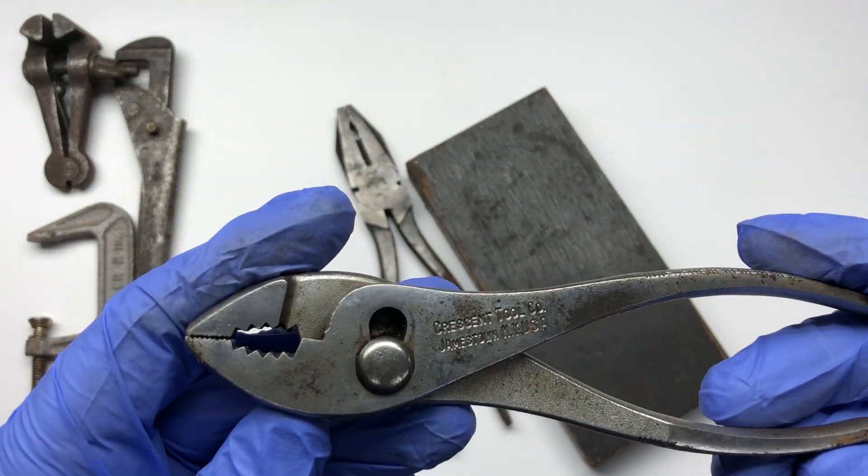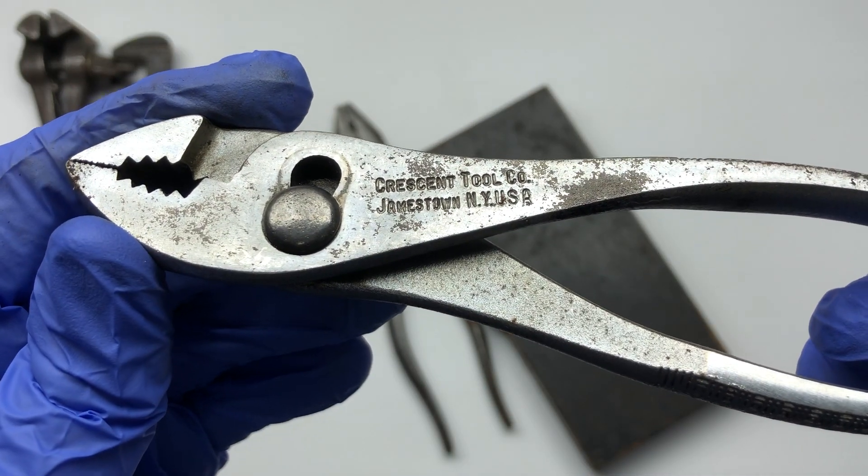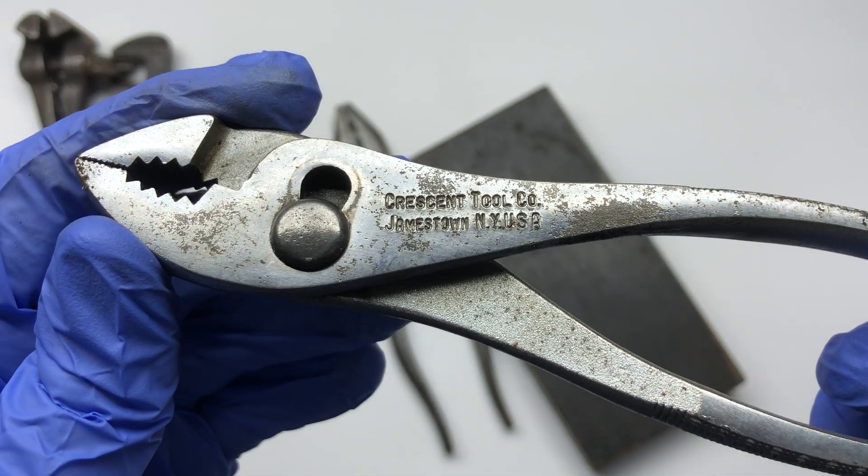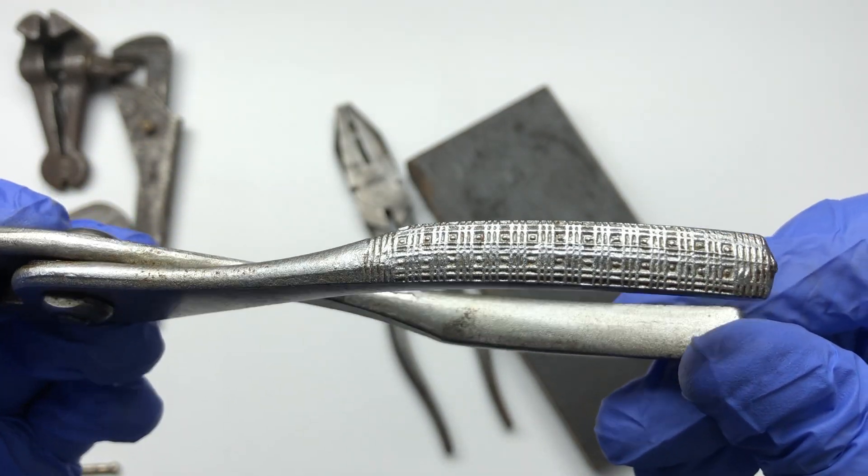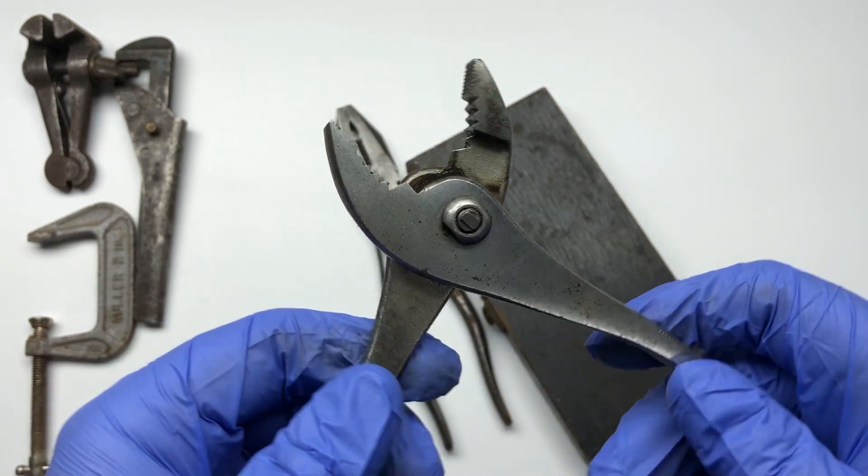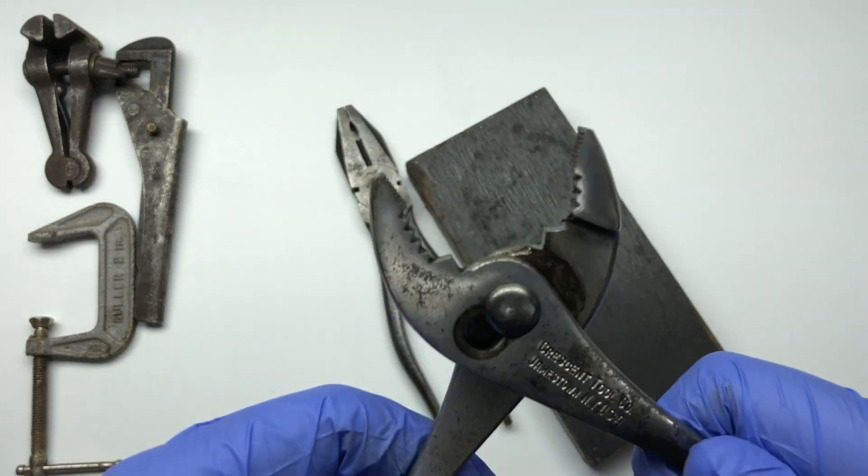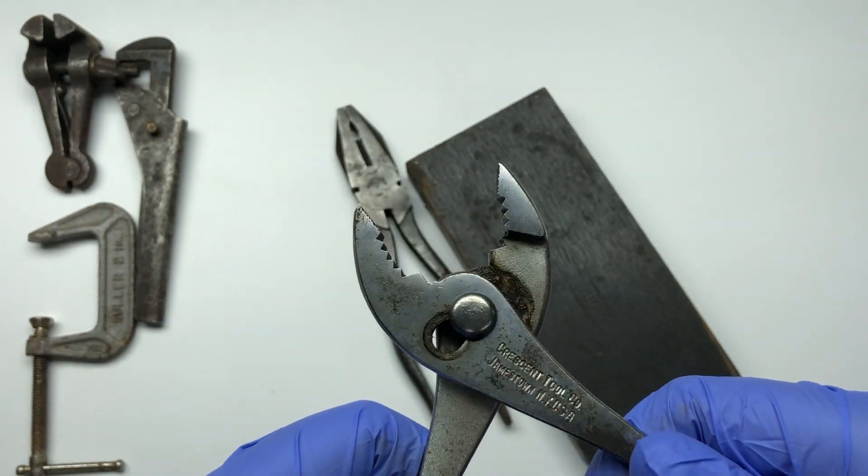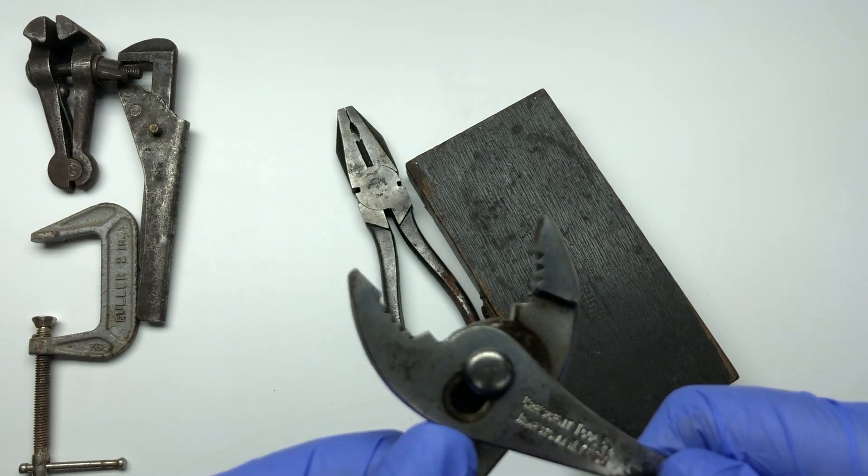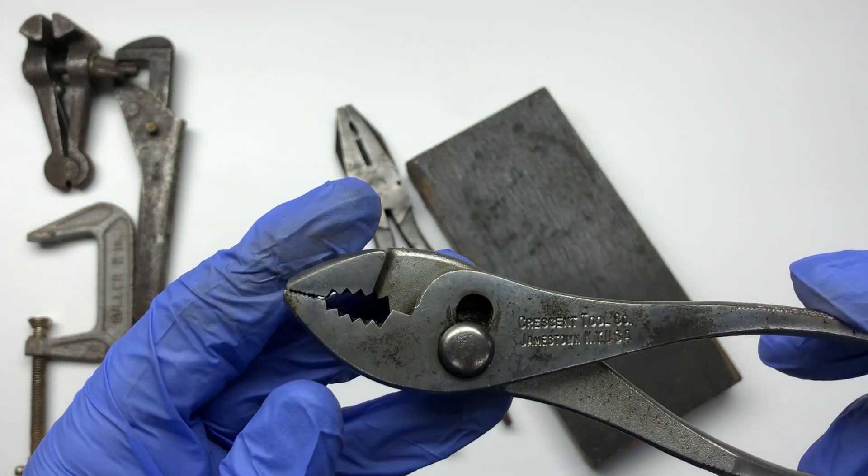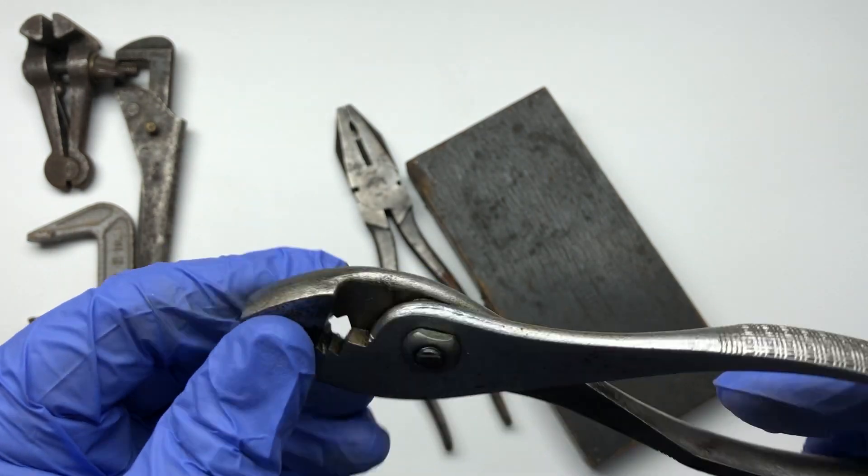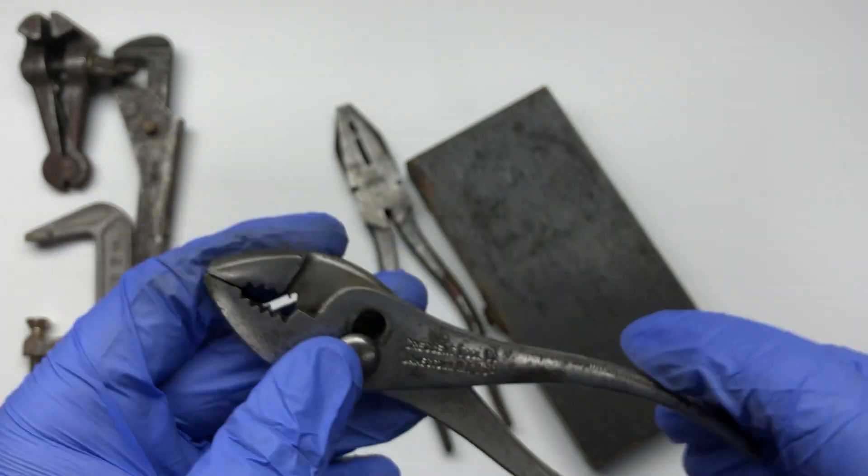This one is Crescent Tool Company, Jamestown, New York. I tell you what, there's a lot of tools made in New York. And they've got like quite a nice little pattern. So they've got slip joints. So they just need a bit of a clean up really. There's no point doing much with it because the chrome's coming off. But it's not, it's not worth taking the chrome off. But yeah, Jamestown, New York, they were a pound.